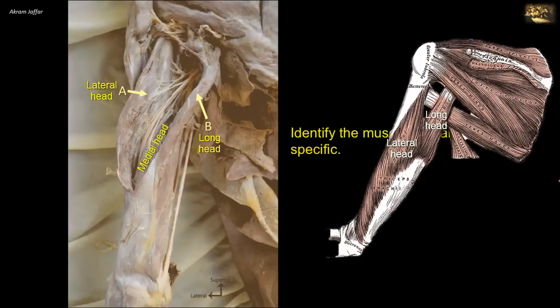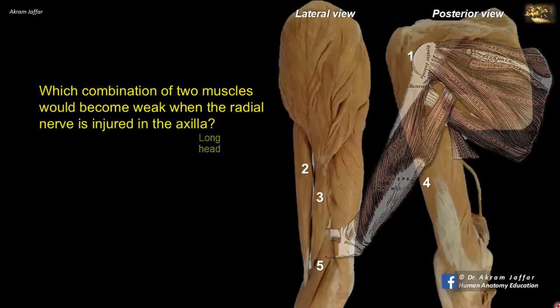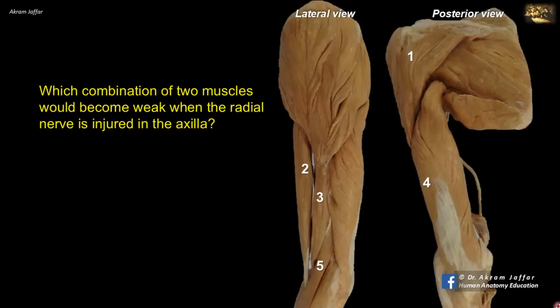And in this way they are comparable to biceps in the flexor compartment. The medial head is the deep part of the muscle, located in a deeper plane, and is comparable to brachialis, that is, the deep muscle in the flexor compartment of the arm. Which combination of two muscles would become weak when the radial nerve is injured in the axilla?